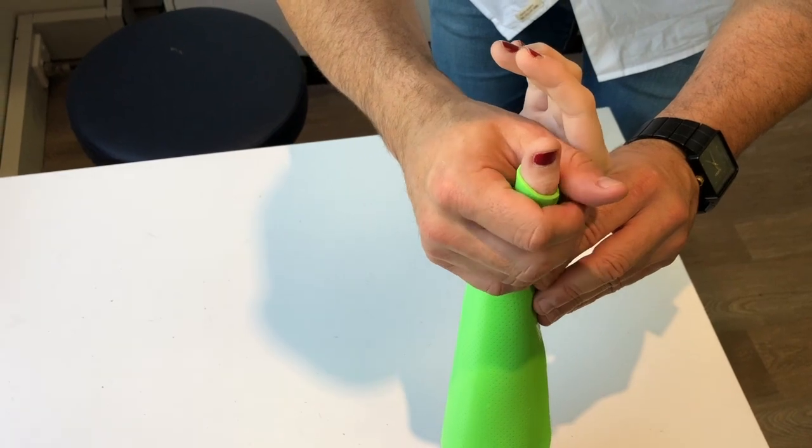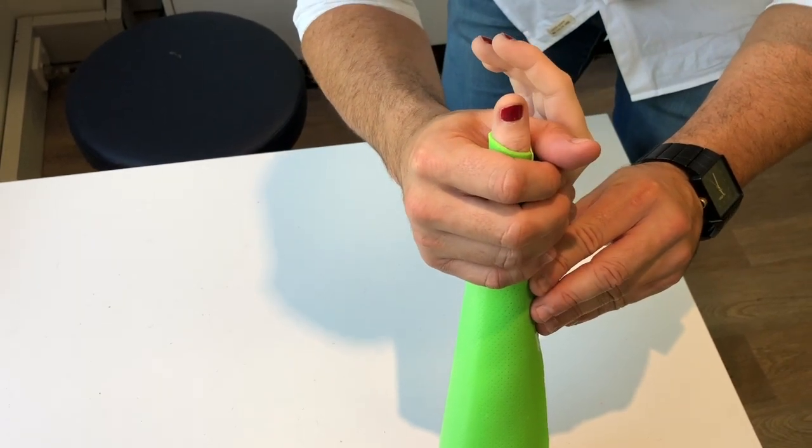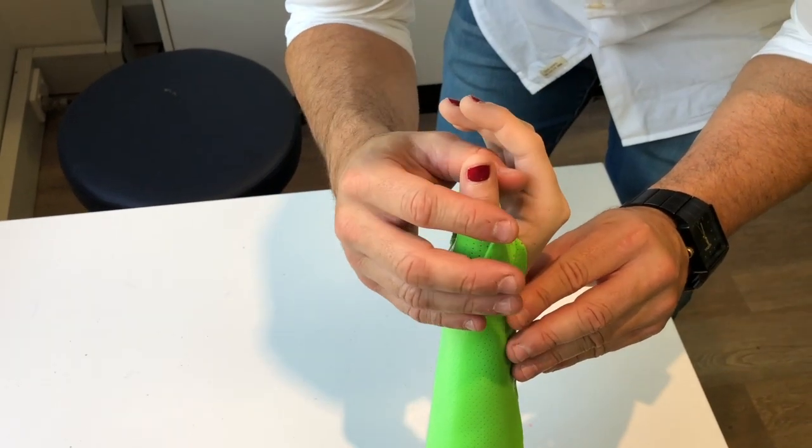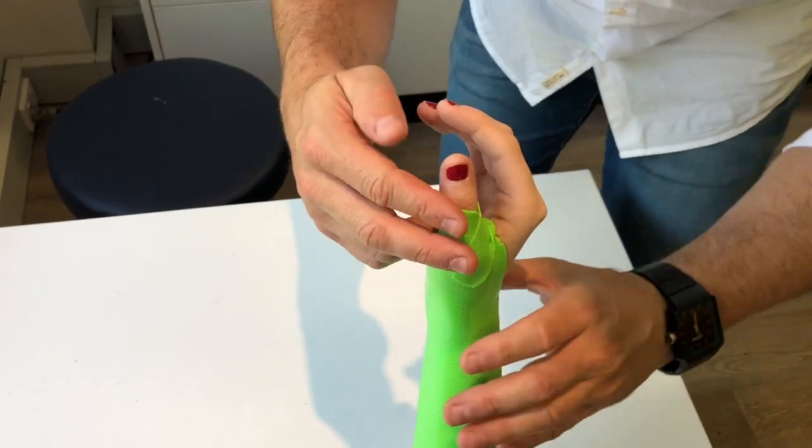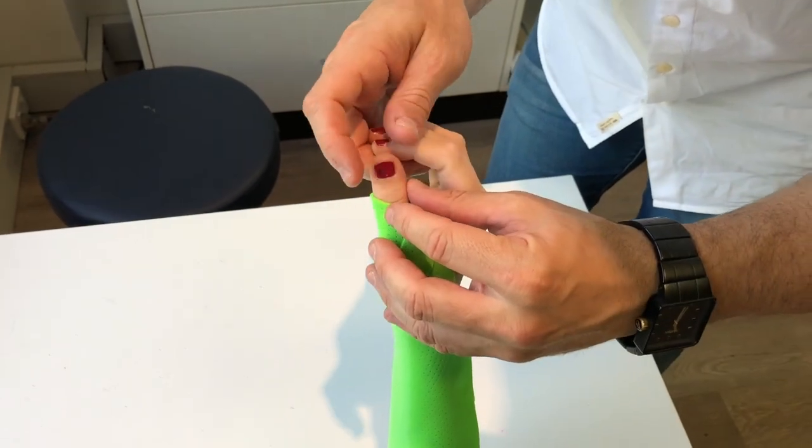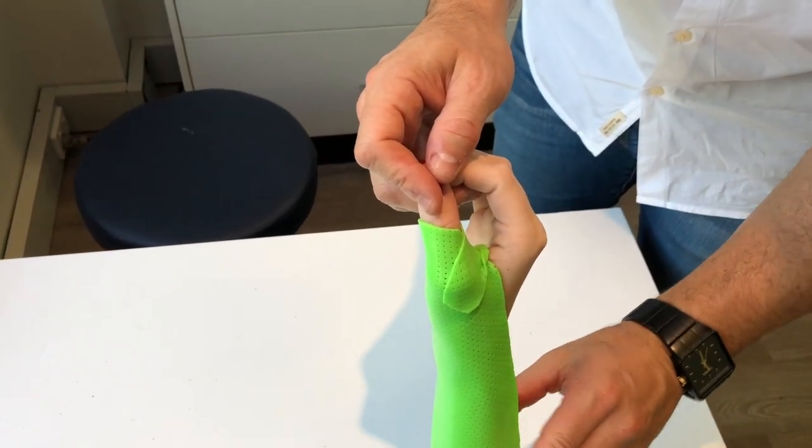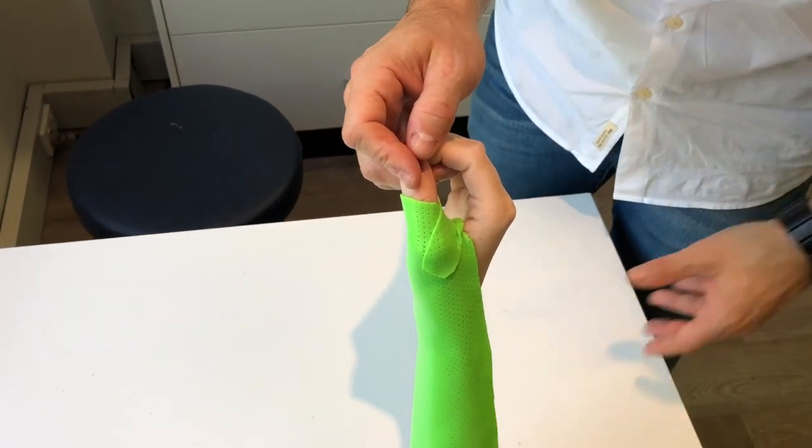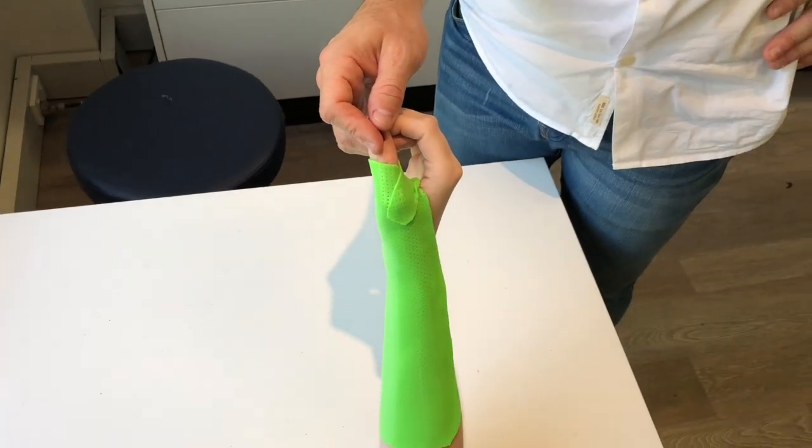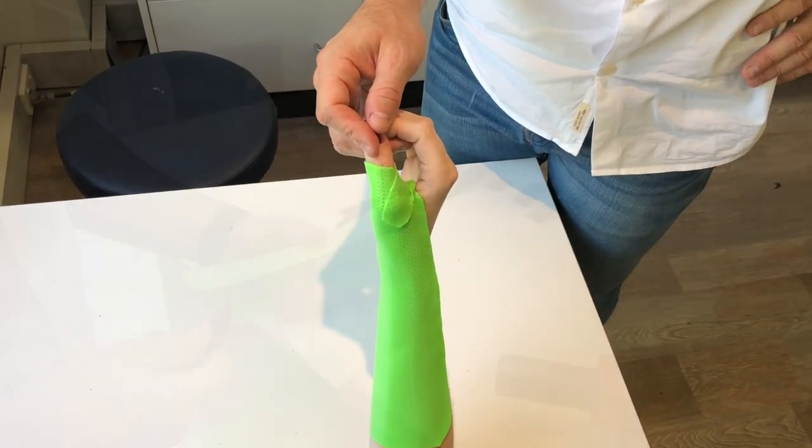Now just be mindful of your patient radially deviating. Bringing them back into that slight ulnar deviation is a much more comfortable position. You can even get them to oppose with a nice big O at the time that the splint's cooling. I like to just hold them in that opposed position.